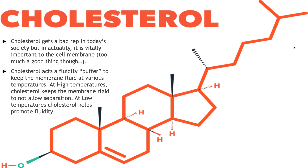Cholesterol usually gets a bad reputation for its role in heart disease, but it is actually vitally important to each cell. It acts as a fluidity buffer for the plasma membrane — similar to a chemical buffer that reduces large swings in pH. A fluidity buffer helps the plasma membrane stay relatively uniform despite high and low temperature changes. At high temperatures, cholesterol helps keep the membrane rigid so it doesn't fall apart; at low temperatures, cholesterol promotes fluidity so the membrane doesn't freeze.